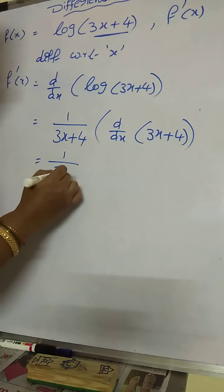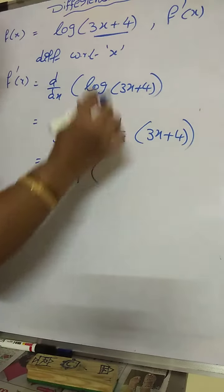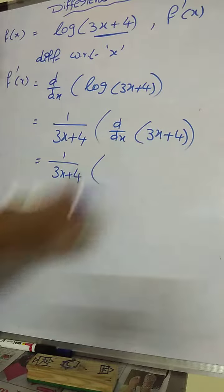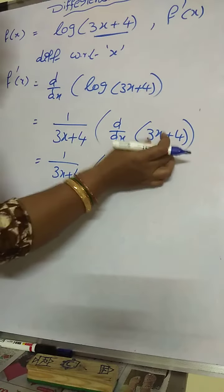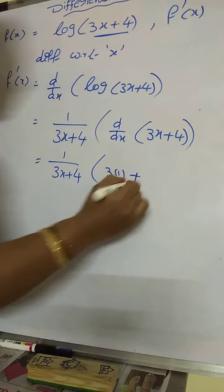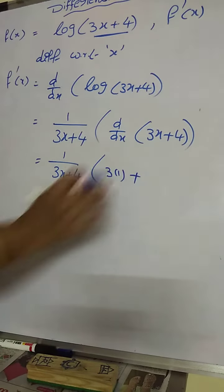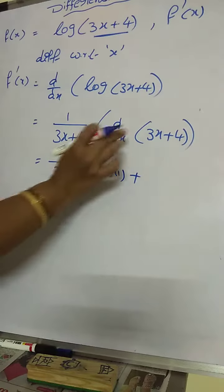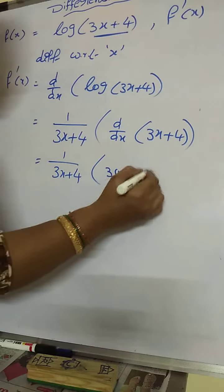Now 1 by 3x plus 4 into d by dx of split 3 into x. What is the formula? d by dx of 3x is 3 into 1. Right. Very good. Plus 4. Only constant. Only number is there. That is called constant. d by dx of constant is 0.